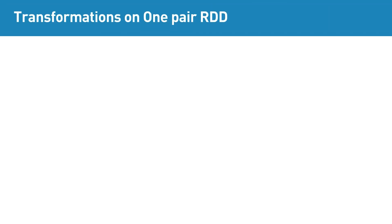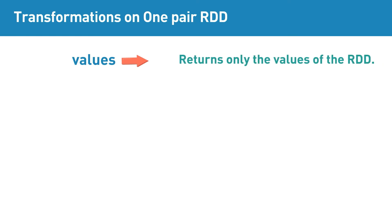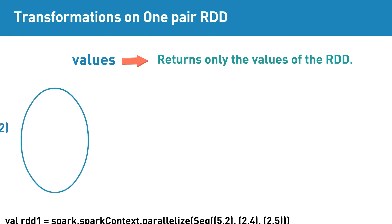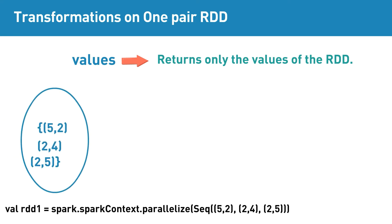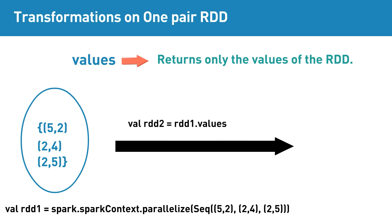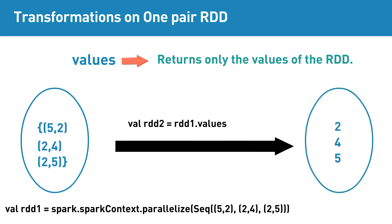values is a pair RDD transformation that returns only the values of the RDD. For example, if the input RDD contains elements (5,2), (2,4), (2,5), then applying the values transformation will return 2, 4, and 5, which are the values in the RDD.